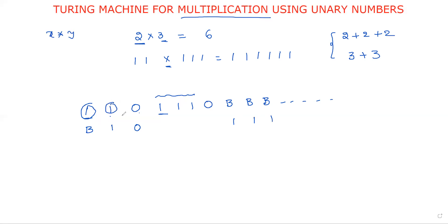For the second one, again do the same procedure — copy one one one. Now these ones are also marked to blank, this is marked to blank, this is blank, this is blank. Finally this is the output. For each one on the left side of the zero, mark that many ones that are present on the right side and copy that many ones into the blank symbol.